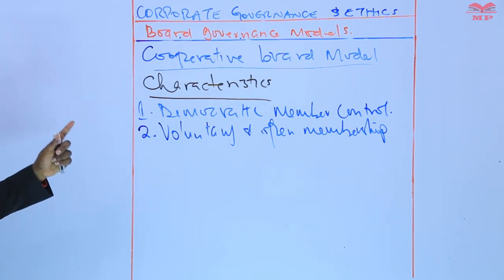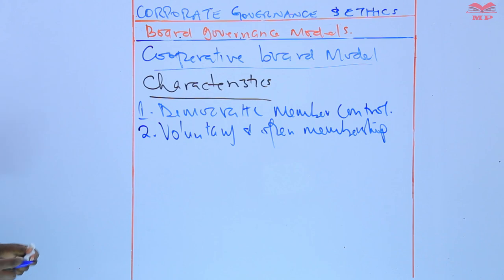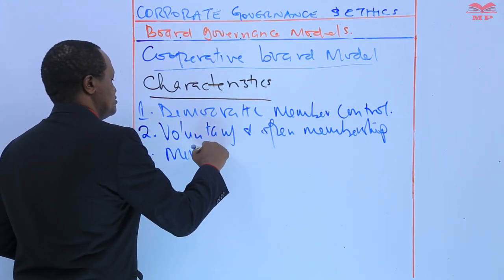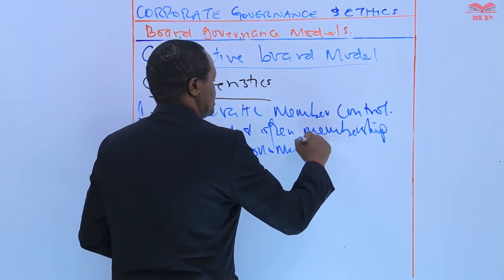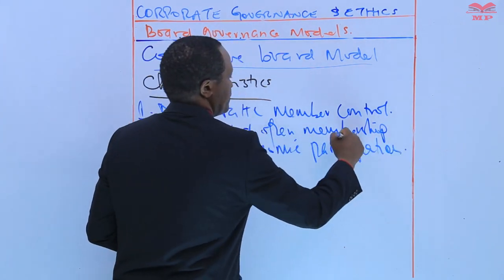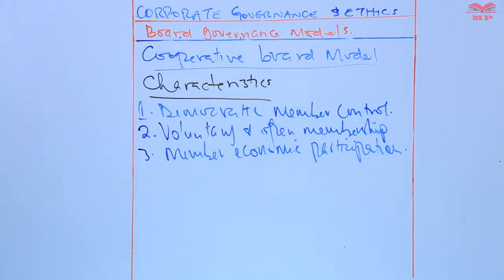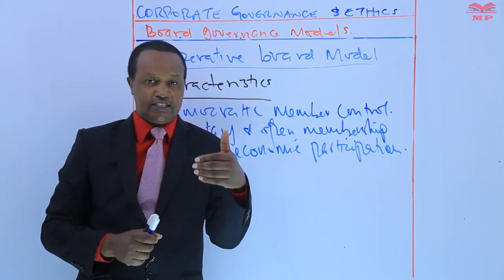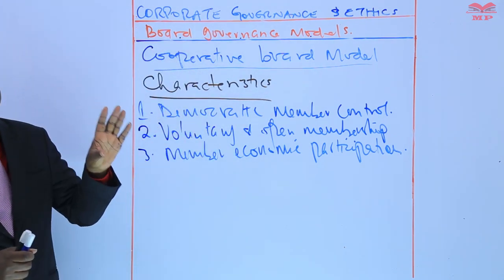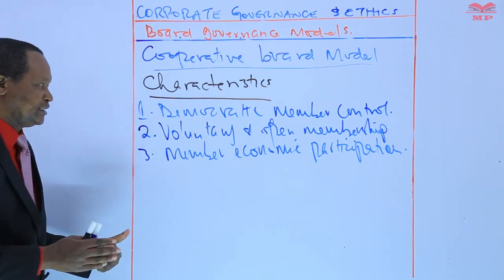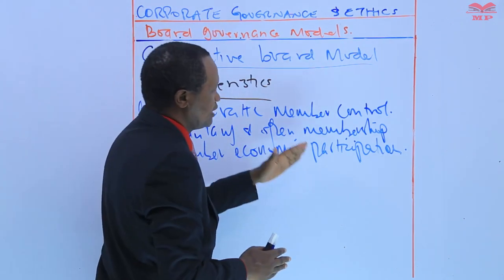Characteristic number three is member economic participation. Members contribute to their cooperative capital and also share in its financial success based on the utilization of services or products, rather than solely on their investment.